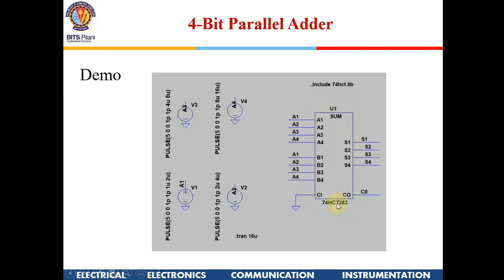To test this chip, I am going to give four test vectors for A1, A2, A3, A4 and give the same values for B1, B2, B3, B4 — essentially adding the same inputs. A1 has a 1 microsecond pulse with a 2 microsecond time period, then 4 micro, 8 micro, and 16 micro time periods. Running the simulation for 16 microseconds gives all combinations of these four signals.